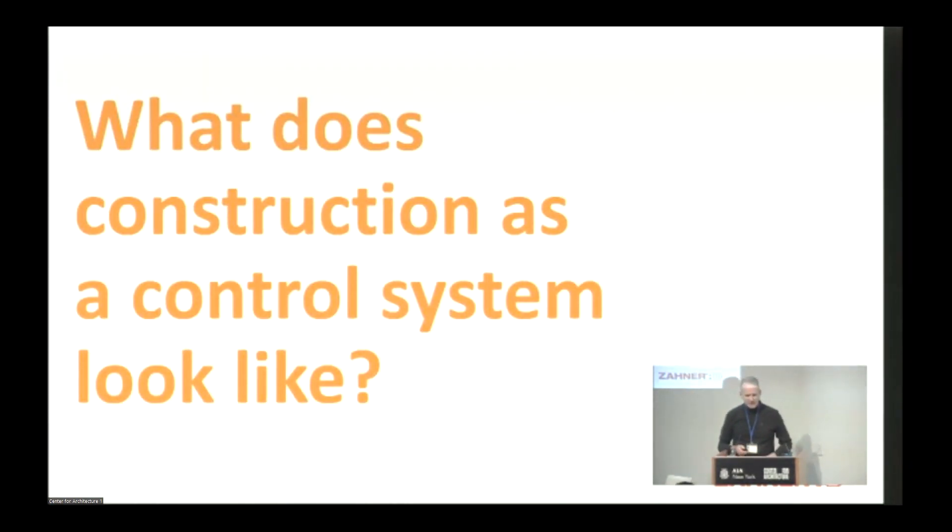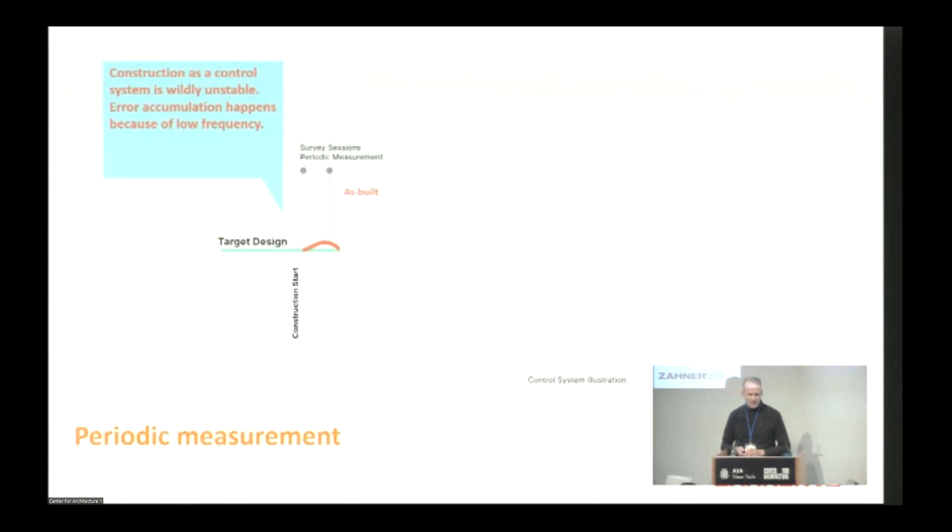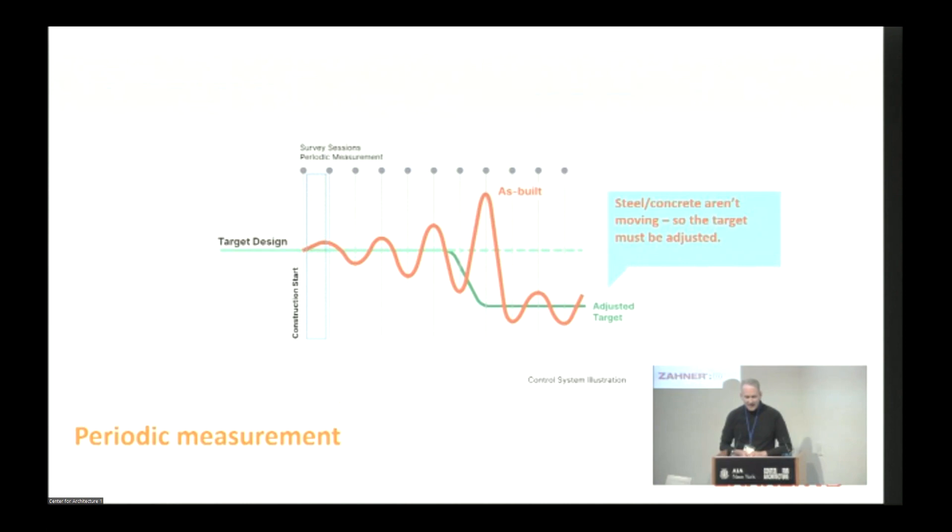If we look at construction as a control system, the target is the green line. Survey happens periodically, and in between, all hell breaks loose and construction happens, and the error starts to accumulate, goes further and further and further out. And eventually, typically, for us, the steel or the concrete or something is so far out but so big that it's not moving. Then people come to us and say, well, we can't move the steel, so what are you going to do? We're forced to then reconcile that change and figure out how we can, with our prefabricated parts, still fit to things that are in the field.